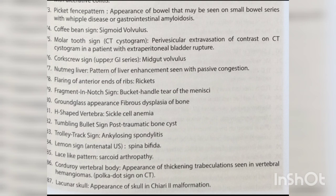Flaring of anterior ends of ribs — rickets. Fragment-in-notch sign — bucket handle tear of the menisci. Ground glass appearance — fibrous dysplasia of bone. H-shaped vertebra — sickle cell disease. Tumbling bullet sign — post-traumatic bone cyst. Trolley track sign — ankylosing spondylitis.